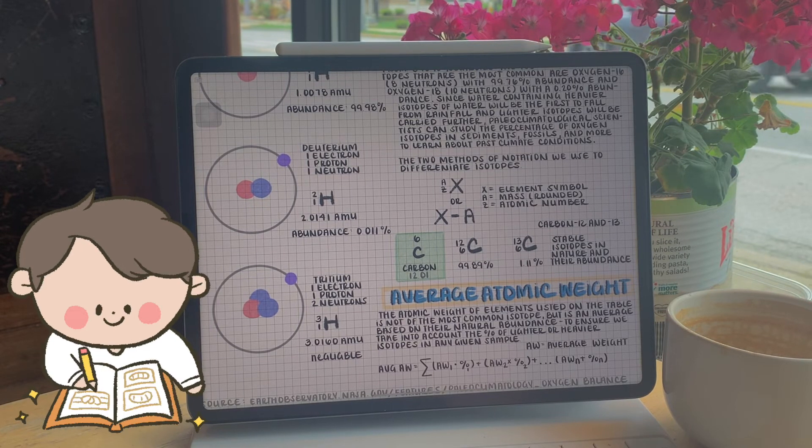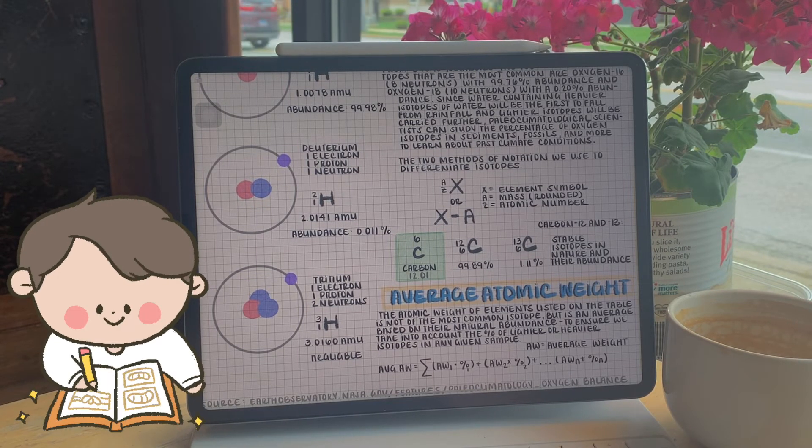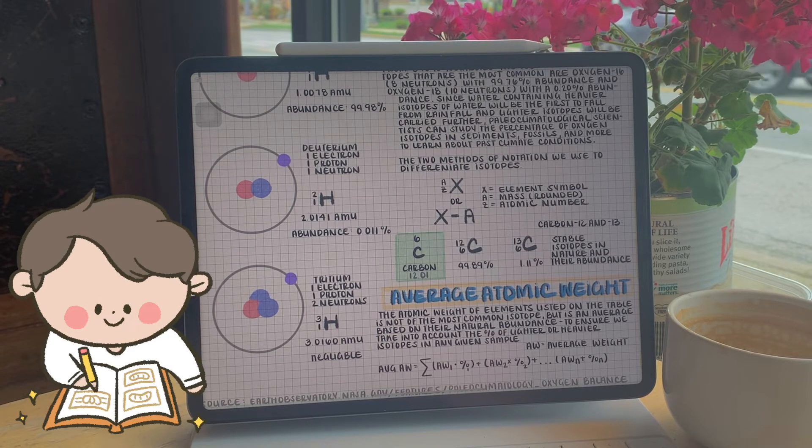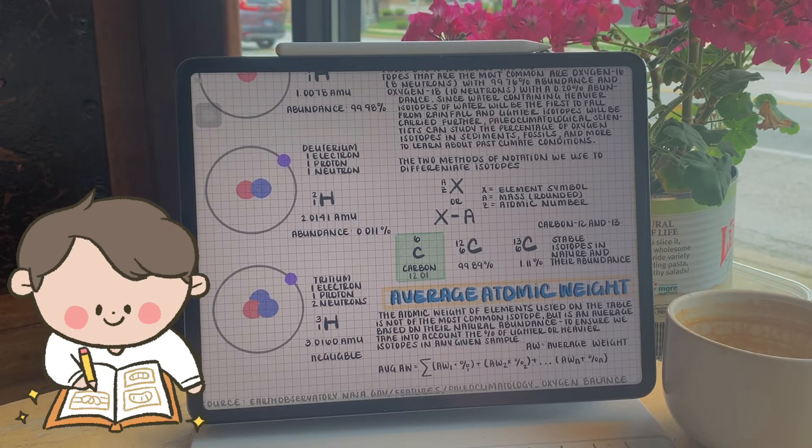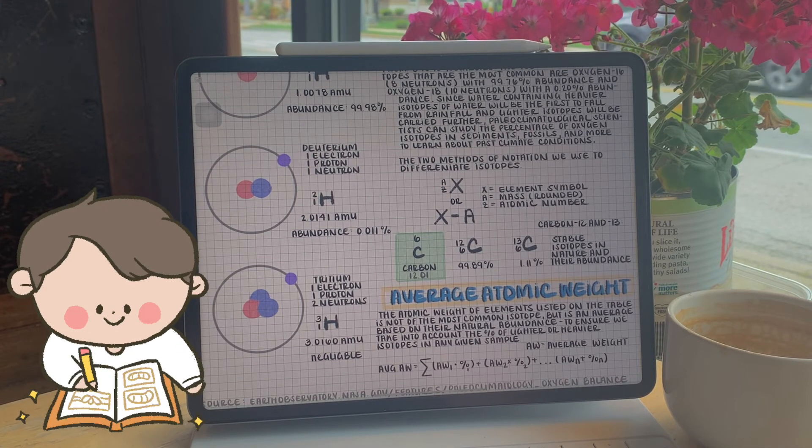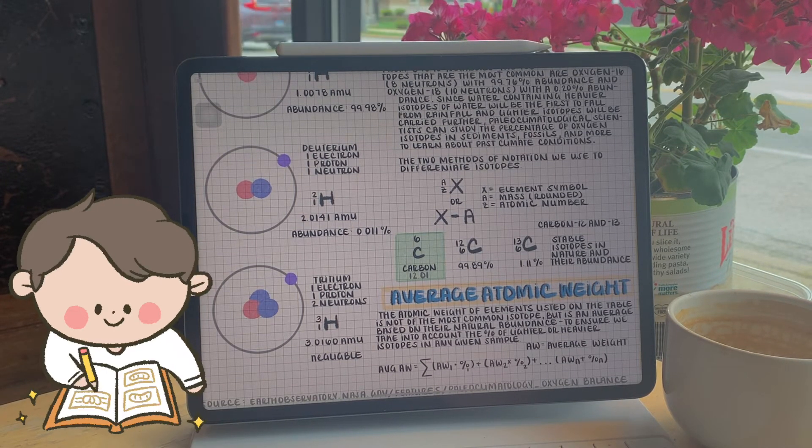So below, you can see the two most common isotopes of carbon, carbon-12 and carbon-13. Carbon-12 is 99.89% abundant, where carbon-13 is only 1.11% abundant in nature.